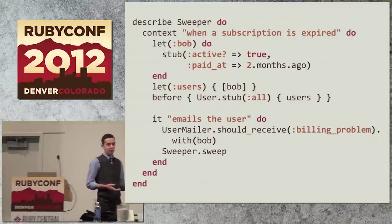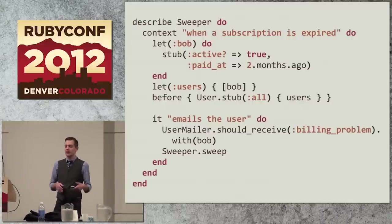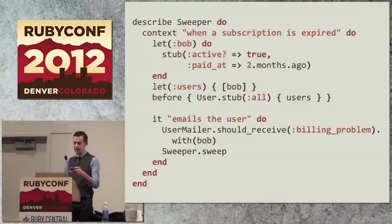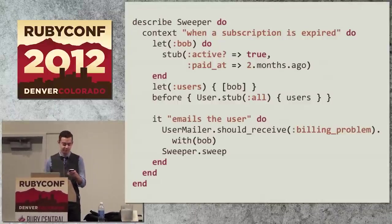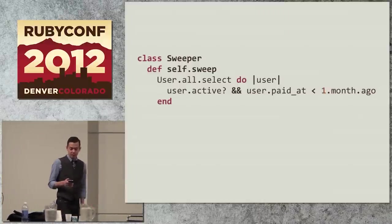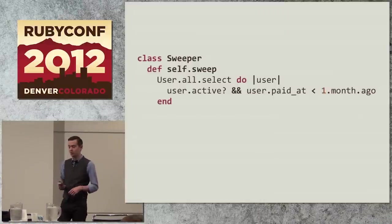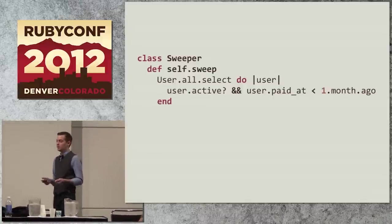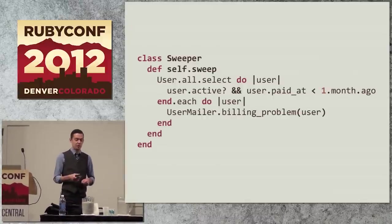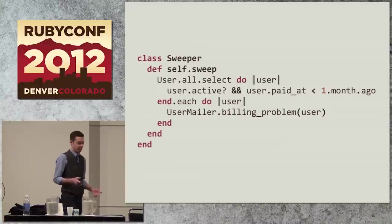This is one of the ways in which we're isolating ourselves from third parties, from other classes like user. We want to email the user when the subscription is expired, so we will invoke the sweeper, and we expect it to call usermailer.billingproblem to send an email to this user telling him things are bad. So this is an isolated unit test. It's isolated because it removes its dependencies like user and like the user mailer. The implementation of this is very simple. We will pull out all the users from the database. We will select only the ones who are active users but have not paid recently enough, and then for each of those, we will send the email.